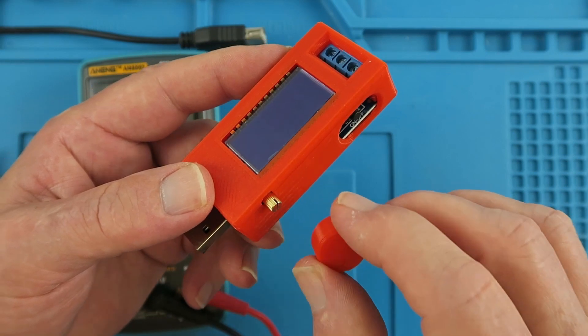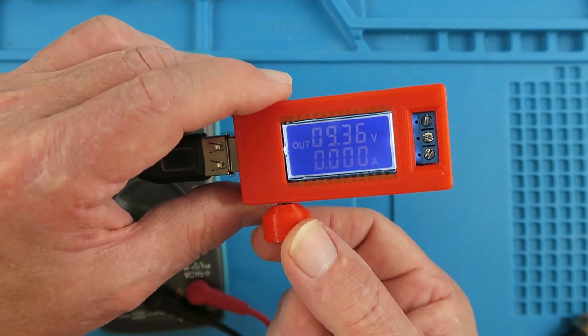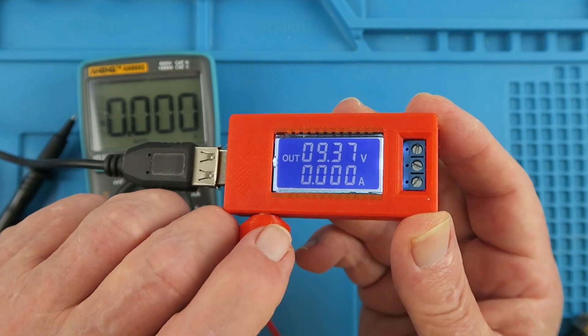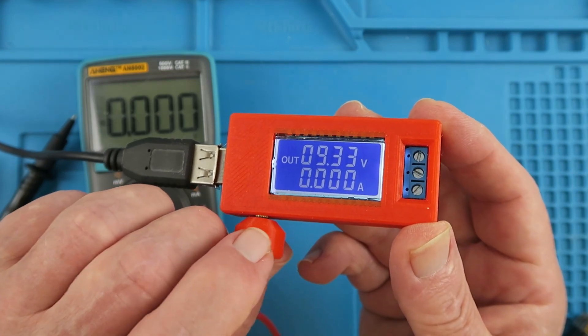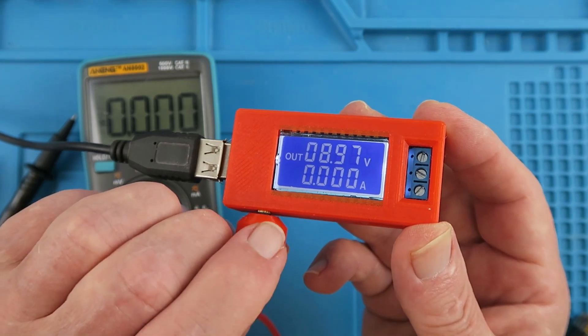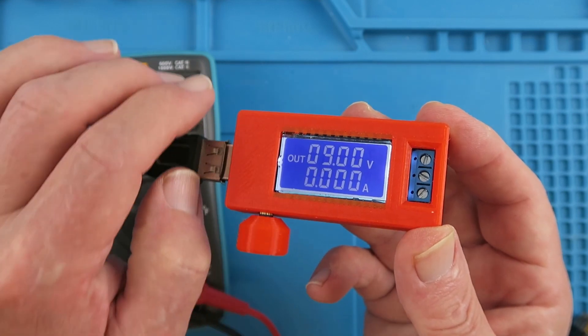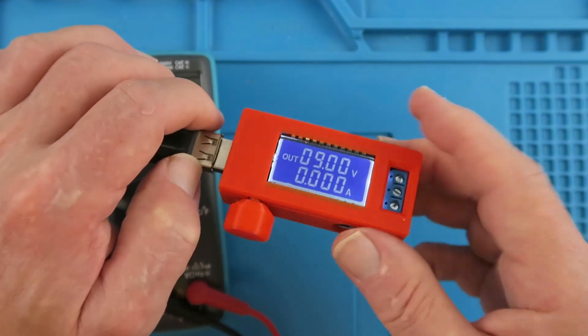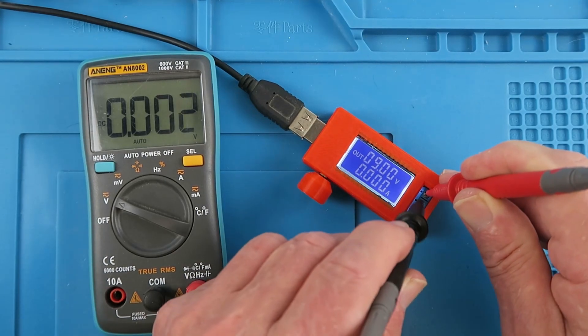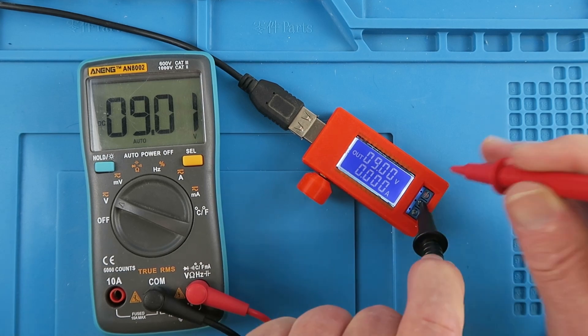The default mode is set up as its buck boost converter. Now I get given many different devices to fix and repair and test, so this will be useful. For example, if we had something with a 9 volt battery in it, rather than using a PP3, we can just set this to 9 volts and we're good to go. Just checking that voltage against my meter. In this mode, the output is on the top two terminals, the out minus and plus. That's measuring 9.01.